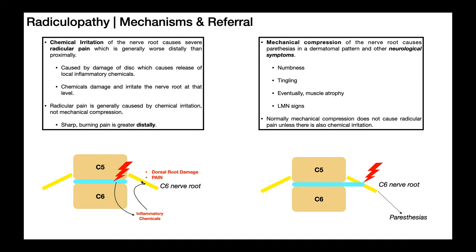This radicular pain is typically worse distally than it is proximally. Right here where the chemical irritation is, it may actually not be as bad — it's still going to be burning — but most patients would describe it worse out at the thumb or the lateral forearm. So it's going to be worse distally in chemical irritation. Now, radicular pain and radiculopathy are two phrases that are often interchanged, but they're not really interchangeable. Radicular pain is that sharp burning pain that's greater distally. When we get to mechanical compression, this is going to give us the true radiculopathy.